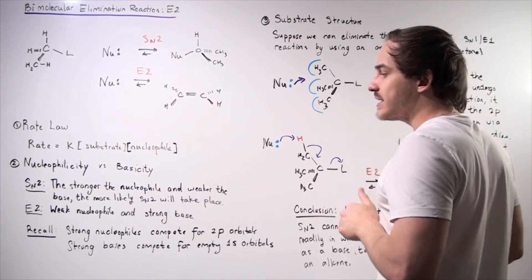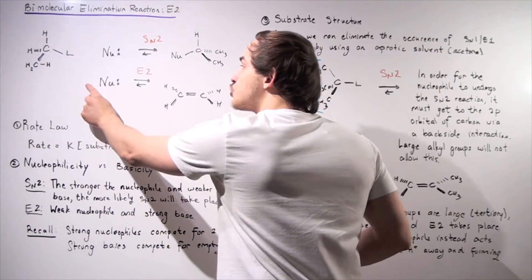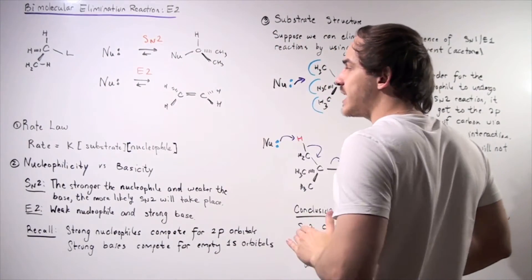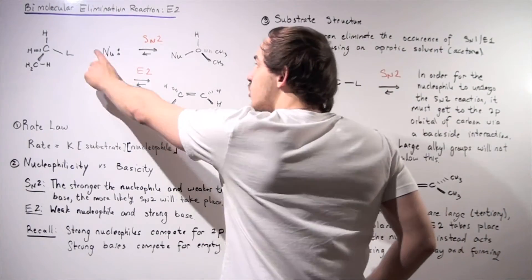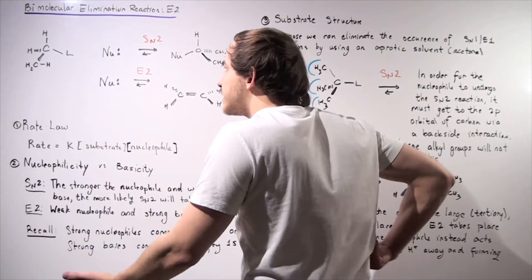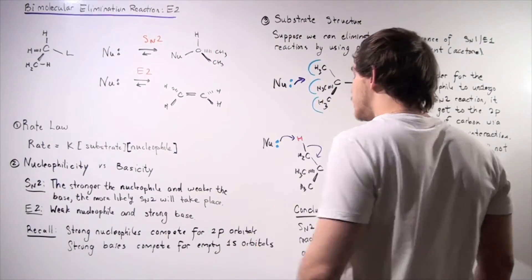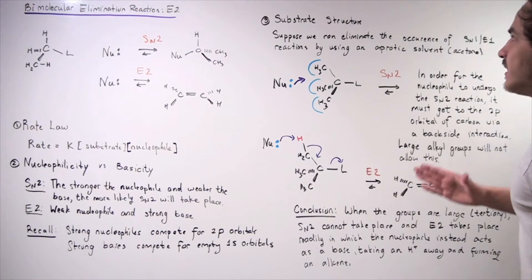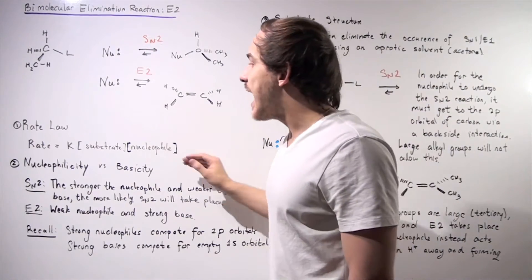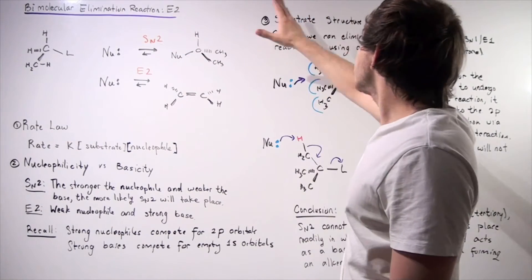When we want the E2 reaction to take place, we have to use a weak nucleophile and a strong base. If this is a strong base and a weak nucleophile, our E2 reaction is likely to take place. On the other hand, if this is a weak base and a strong nucleophile, it will more readily compete for our 2p orbital than the 1s orbital, so our SN2 reaction will take place. Finally, let's discuss how the substrate structure affects which reaction takes place.